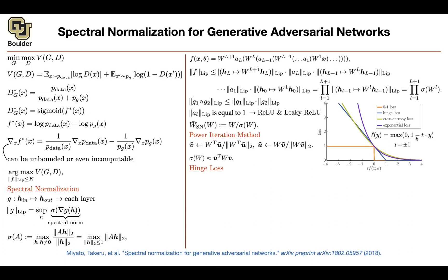Not only do you want the model to be correct, you want it to be correct by a margin — not just at the boundary of zero. Visually, whenever the multiplication of the model's prediction and the ground truth is greater than 1, there's no penalty; otherwise you keep penalizing. The zero-one loss penalizes by a constant, the blue line is the hinge loss, and cross-entropy approximates the hinge loss — that's what the original GAN used. You can also have exponential loss and other variants.